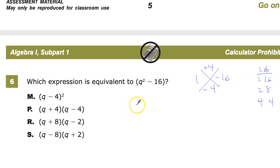So, I end up with Q plus 4. It could be minus 4, too. Multiplication is commutative, so you're good. And Q minus 4. So my answer for this one should be P.